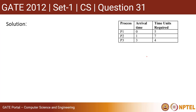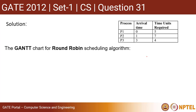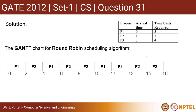Now for round robin, the quantum size is two time units. Initially only P1 is there, so it executes for two quantum. After two quantum are done, P1 is left with three quantum. By that time P2 has already arrived, so P2 enters and also executes two quantum, leaving P2 with five quantum remaining.